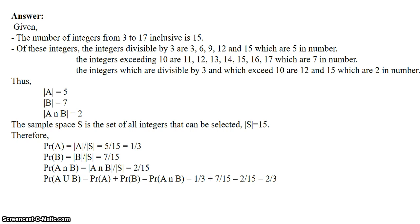Among these 15 integers, the integers divisible by 3 are 3, 6, 9, 12, and 15, and the count of these numbers is 5. Next, the integers exceeding 10 — the numbers which are greater than 10 — are 11, 12, 13, 14, 15, 16, and 17, and the count of these numbers is 7.